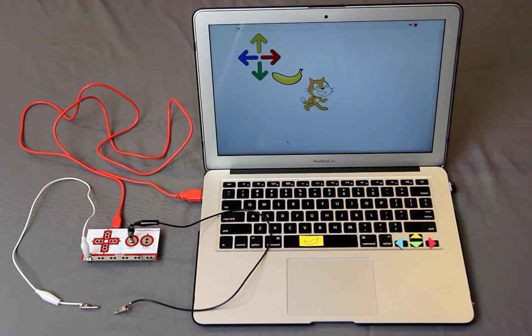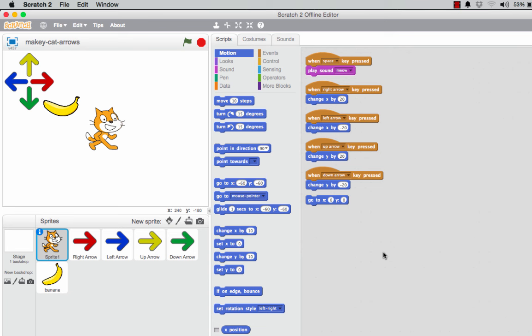We're going to walk you through the steps of setting up a Makey Makey keyboard that controls a simple animation. The animation, programmed in Scratch, moves the cat around the screen when the arrow keys are pressed, and makes the sound meow when the space bar is pressed. Here the space bar is represented by a banana, which we'll explain in a bit.